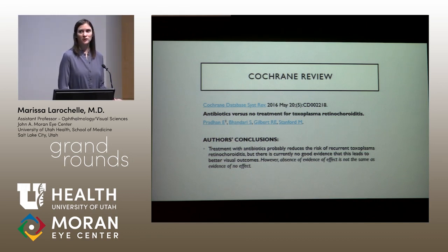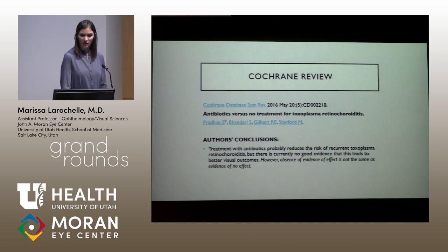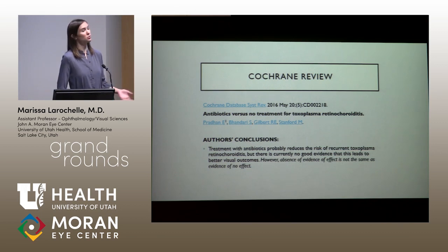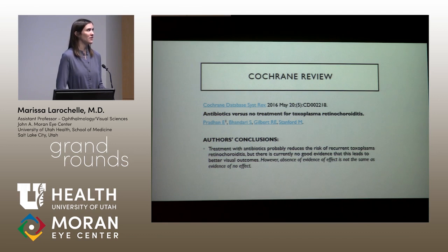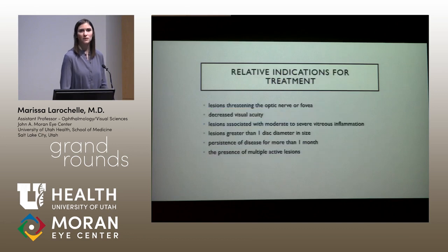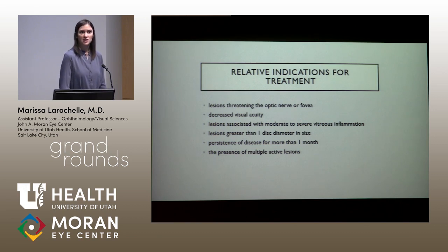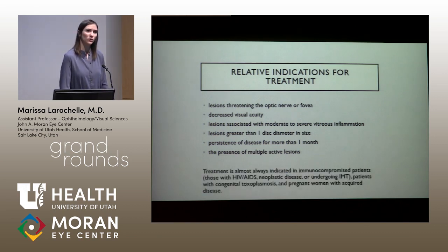Thinking back to that third patient — as doctors, first do no harm. If she had never gone to an eye doctor, she may have fared better in the long run. A 2016 Cochrane review found that treatment with antibiotics probably reduces the risk of recurrence, but there's no good evidence showing it leads to better visual outcomes — though absence of evidence is not evidence of no effect. Definite indications for treatment include proximity to the fovea or optic nerve, symptomatic patients, significant vitritis, large lesion size, persistence over time, multiple lesions, and we always treat pregnant patients, immunocompromised patients, and congenital infections.